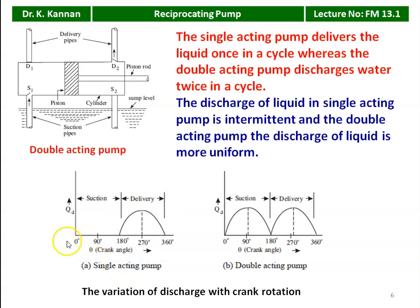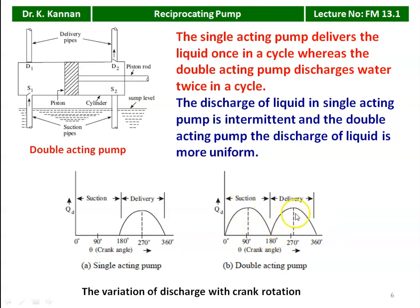From the diagram, in a single acting pump during the suction stroke (0 to 180 degrees), water is drawn inside; during the delivery stroke (180 to 360 degrees), water is compressed and delivered — so it delivers liquid once per cycle. In a double acting pump, water is discharged twice per cycle — in every stroke, one side has suction and the other has delivery, giving continuous delivery. The discharge of liquid in a single acting pump is intermittent, whereas in a double acting pump the discharge is more uniform and continuous.